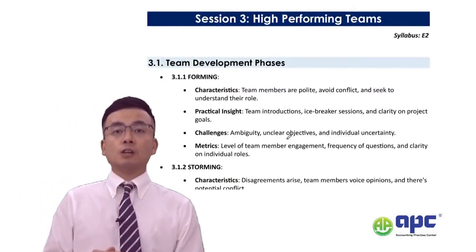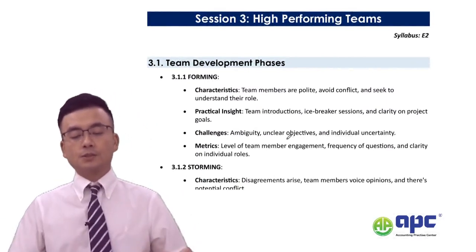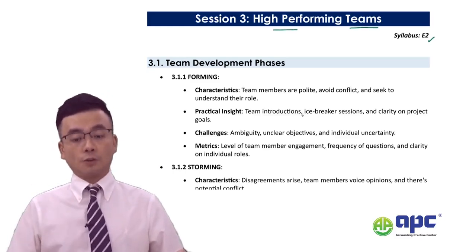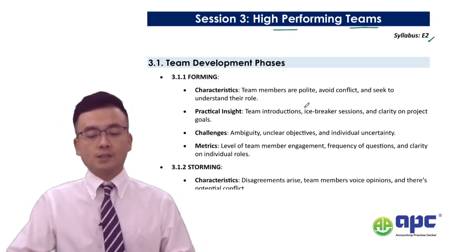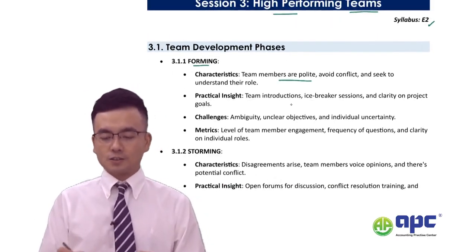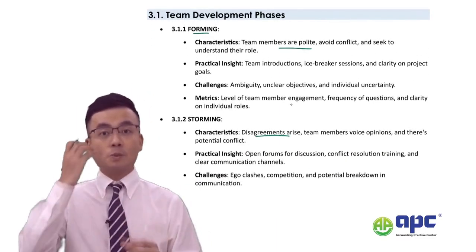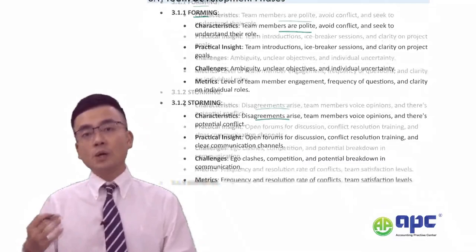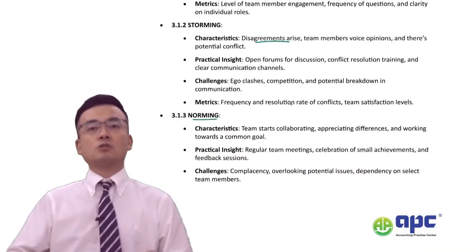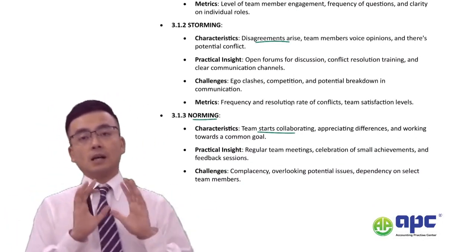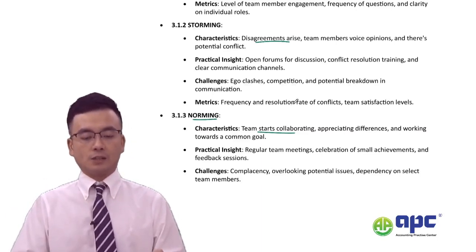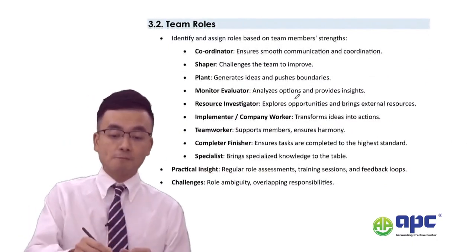Section 3 in Core Activity B covers high-performing teams. You need to know the team development phases: forming — where members are polite at first; storming — where they disagree as they learn each other's opinions; then a leader is selected; during the norming stage they start to cooperate, and norms including reward and punishment systems are agreed upon.